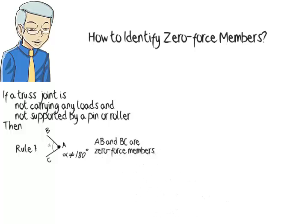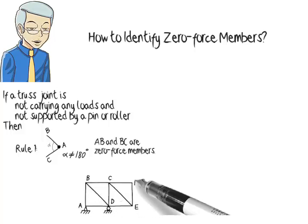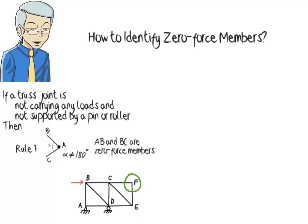In this structure joint F connects two members only, there is no load or support at the joint, therefore both EF and CF are zero-force members.